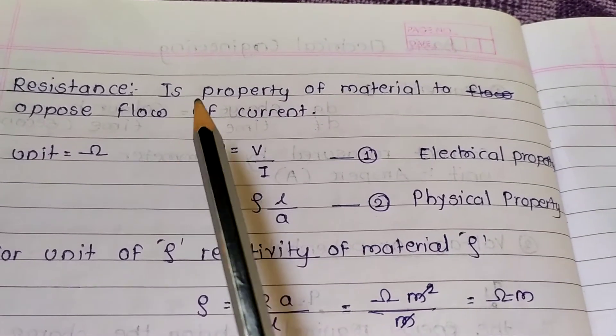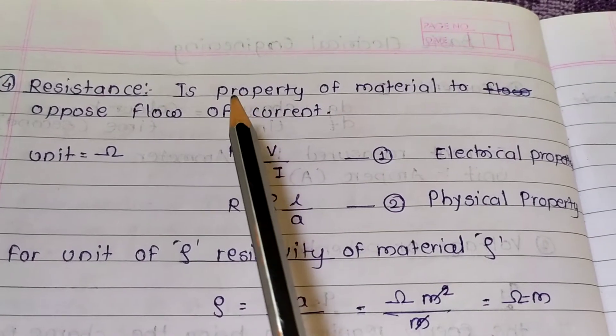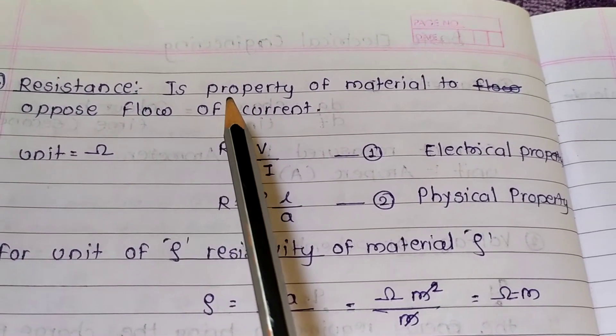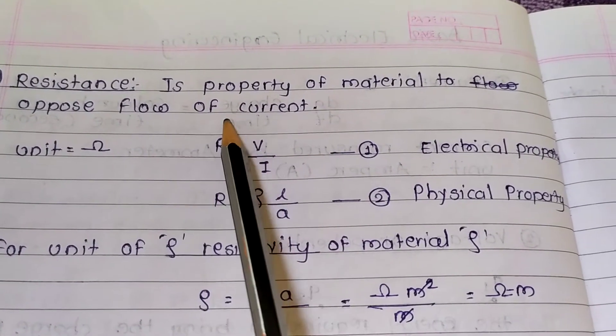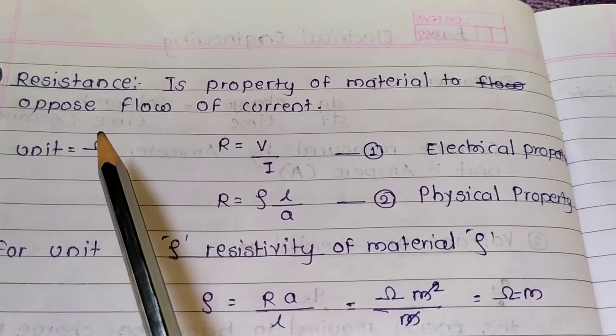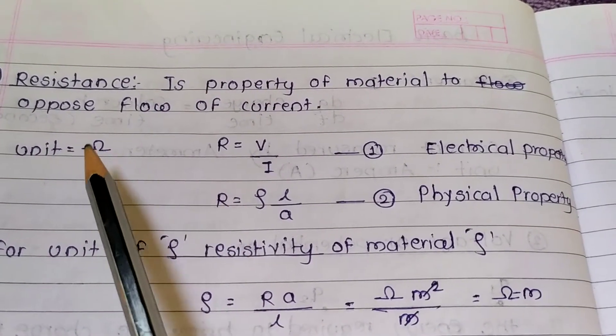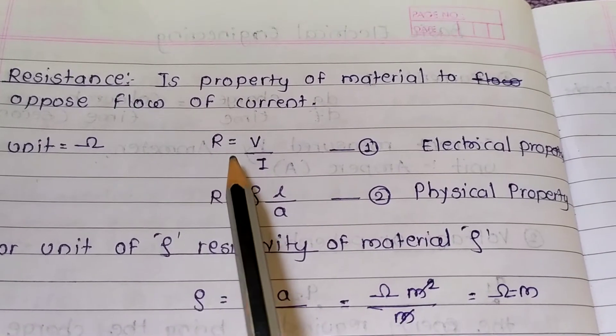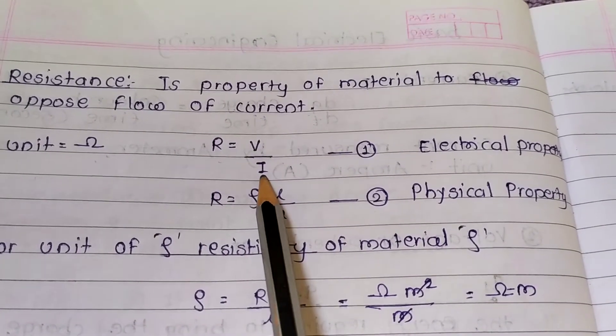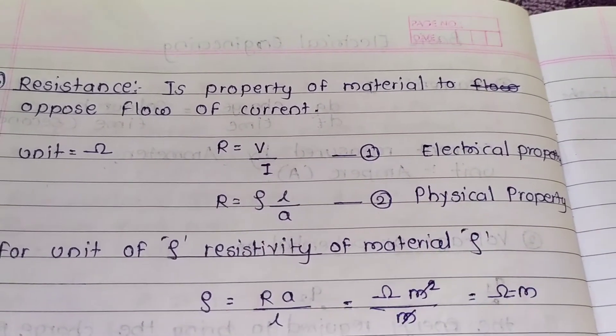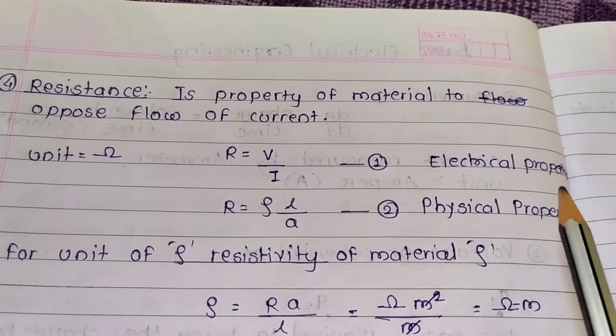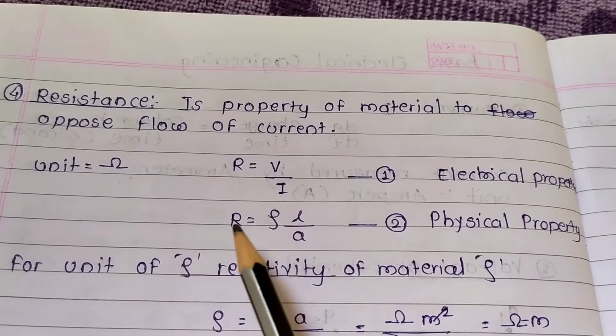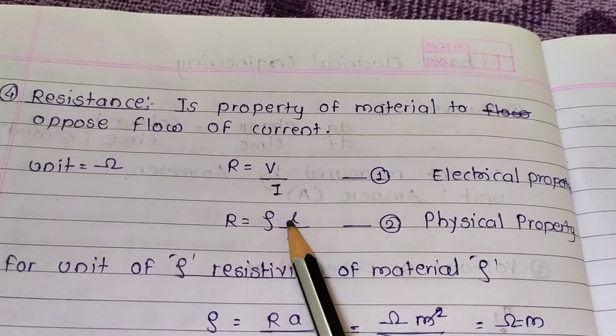Now what is resistance? This property of a material which opposes flow of current is resistance. Unit is ohm. R = V/I according to Ohm's law. This is electrical property, and the physical property is R = ρL/A.